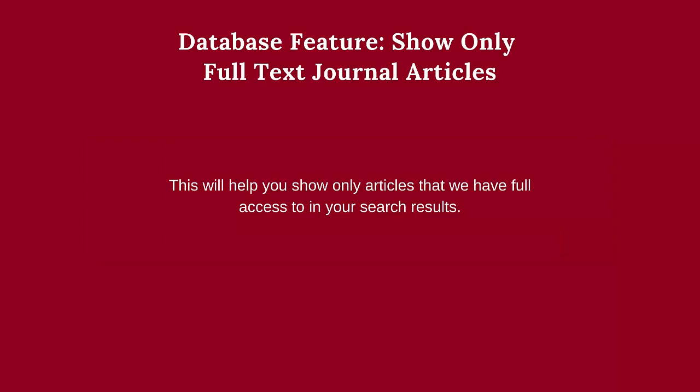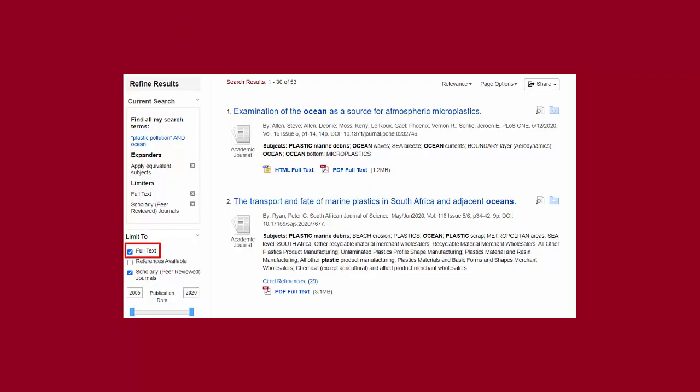Another database filter to be aware of is the ability to limit your search results to show only those journal articles that we have the full-text available. This means that you would not need to go to another database to find an article or request the article through Electronic Interlibrary Loan. If you don't want to see results that have a "Check for Full Text" button, you can check the box next to Full Text. Going back to my search, I checked that box, and it brought my results down from over 400 results to just over 50 results.